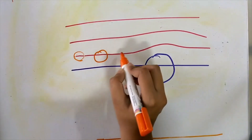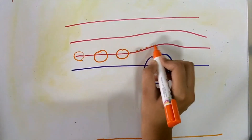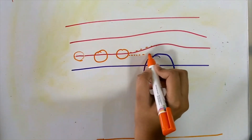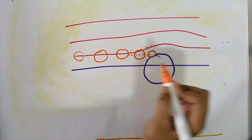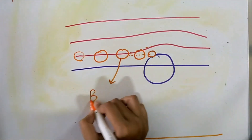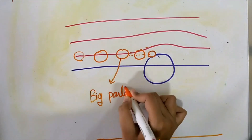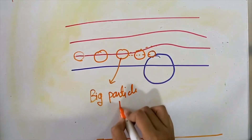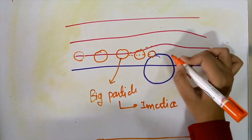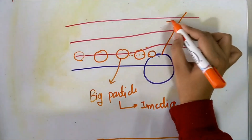When your particle is large, it has more inertia. Then instead of following the streamline, which curves near the fiber, the particle will follow its original path — a straight line — and hit the fiber. This mechanism is known as impaction.